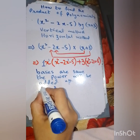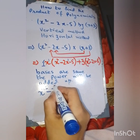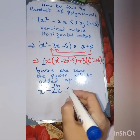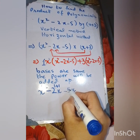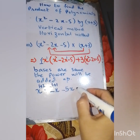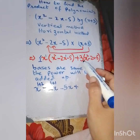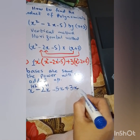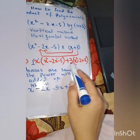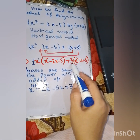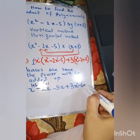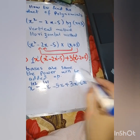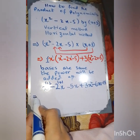Continuing: x times minus 5 gives minus 5x, since 5 has no x so x remains as a single term. Then plus 3 times x squared gives 3x squared. Plus 3 times minus 2x: the signs give minus, and 3 times 2 is 6, so minus 6x. Finally, minus 3 times 5 gives minus 15. That is the full product expanded.